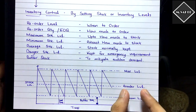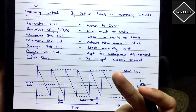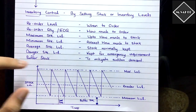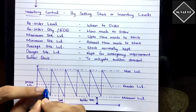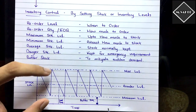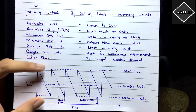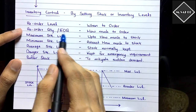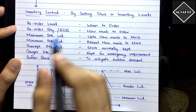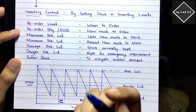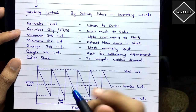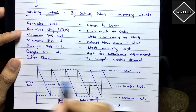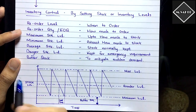Reorder level is the level at which you place a fresh new order. Reorder quantity is how much to order — as shown on the graph, it's the quantity of the order that brings your stock back to the maximum level. EOQ (economic ordering quantity), seen in the previous video, is the optimum quantity at which carrying cost and ordering cost are minimum. Reorder quantity answers: how much to order.